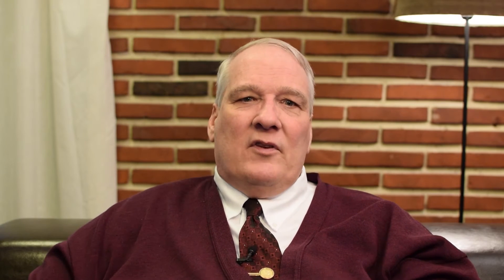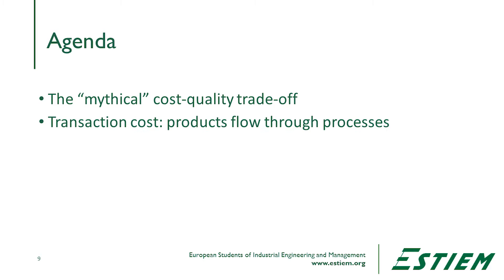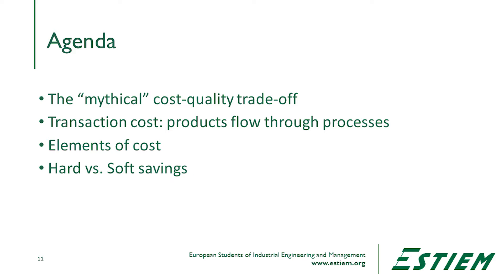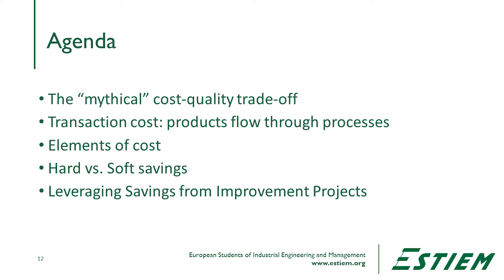When we think about cost, there are a couple of things we need to cover. First, we'll talk about the mythical cost-quality trade-off. Then we'll talk about transaction costs — what happens as products flow through processes. We'll discuss the elements of cost, the difference between hard and soft savings, and how to leverage savings from improvement projects.